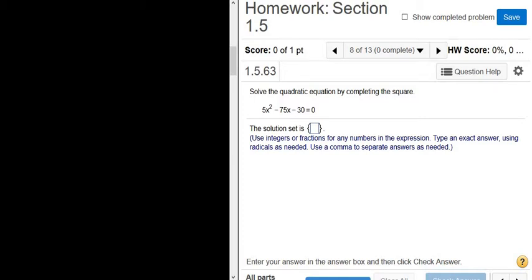In this video, we have to solve a quadratic equation by completing the square. So we have 5x² - 75x - 30 = 0.